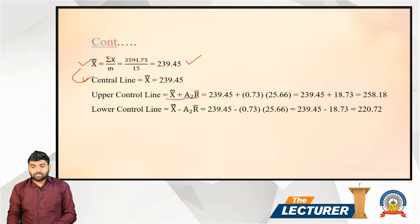The formula for the Upper Control Limit of the X-bar chart is: UCL = X double bar plus A2 times R-bar. So we have 239.45 plus A2 times R-bar, where A2 equals 0.73.